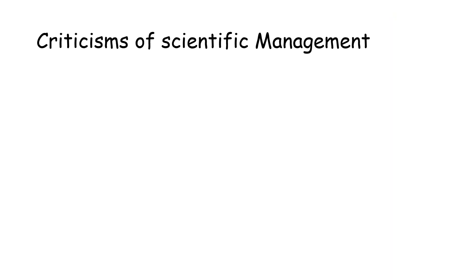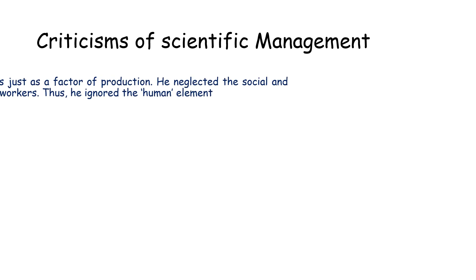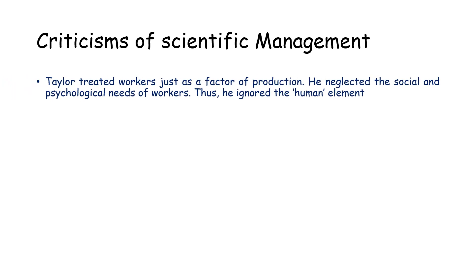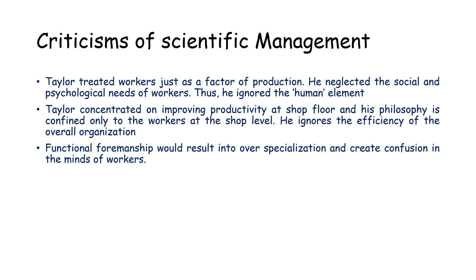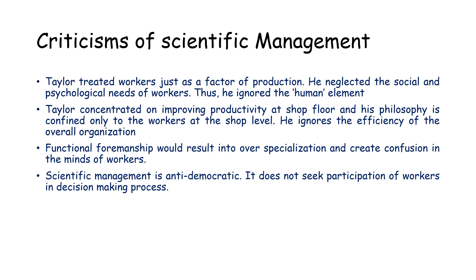The scientific management theory of Taylor was criticized by many managers, workers, and psychologists for the following reasons: Taylor treated workers just as a factor of production and neglected their social and psychological needs, thus ignoring the human element. Taylor concentrated on improving productivity at the shop floor only, ignoring the efficiency of the overall organization. Functional foremanship resulted in over-specialization and created confusion among workers. Scientific management is also considered anti-democratic and authoritarian in its approach, as it does not seek participation of workers in decision-making.